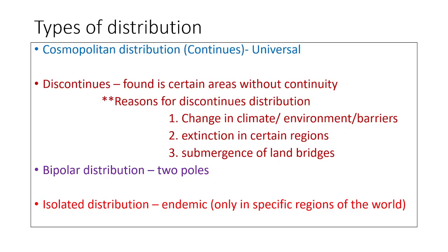Bipolar distribution refers to animals distributed at both poles. Some animals are found only in the Arctic and Antarctic waters, with no representatives in the intermediate oceans. Examples of organisms exhibiting bipolar distribution include sea lions and salmons.